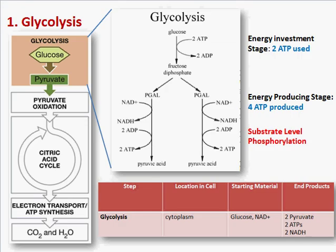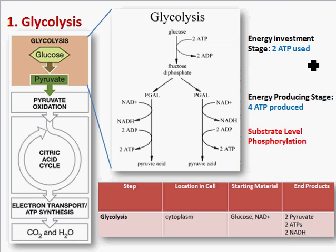Here's the first step: glycolysis. There are ten overall reactions, which we can break into two phases. The first is the energy investment phase, where we actually use two ATPs — we take phosphates off the ATP and add them to the glucose, actually increasing the energy. Then we split the glucose, which has six carbons, into two three-carbon molecules for the second phase of glycolysis.